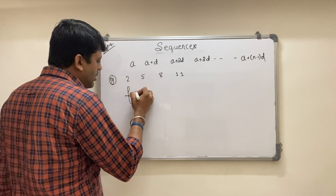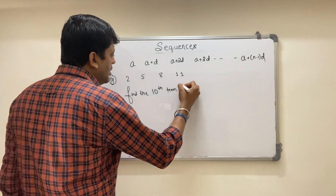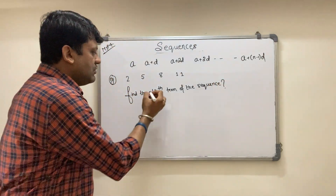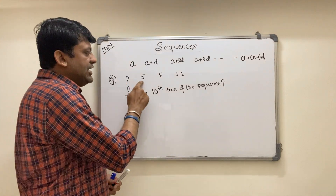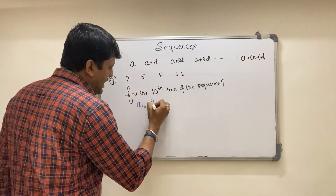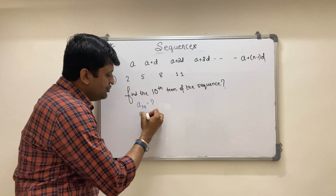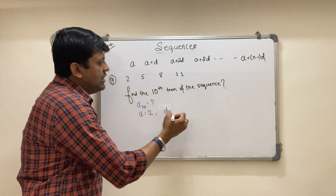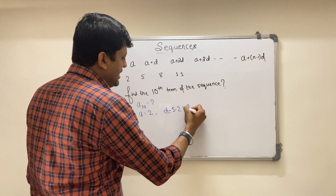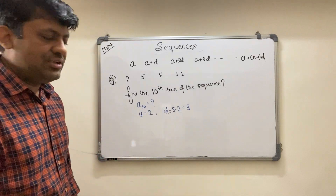Now the question says: find the tenth term of the sequence 2, 5, 8, 11. We want A(10). Given: a = 2 and d = 5 − 2 = 3. Using the formula: A(10) = a + (10−1)·d = 2 + 9·3 = 2 + 27 = 29. You should not just manually keep adding 3 step by step — the examiner wants to see you use the formula. Cross-checking by counting up: 11, 14, 17, 20, 23, 26, 29. Yes, 29 is correct.